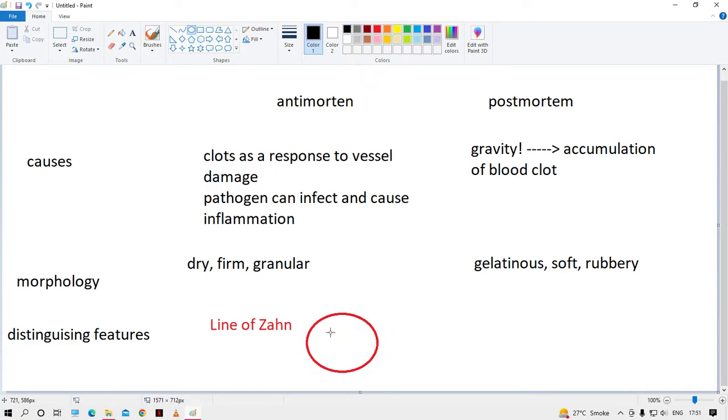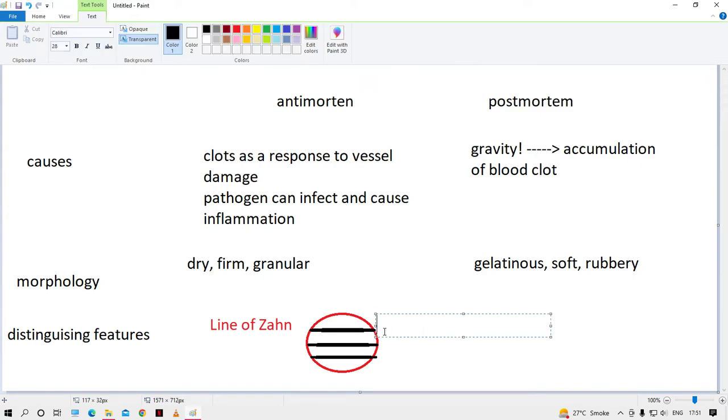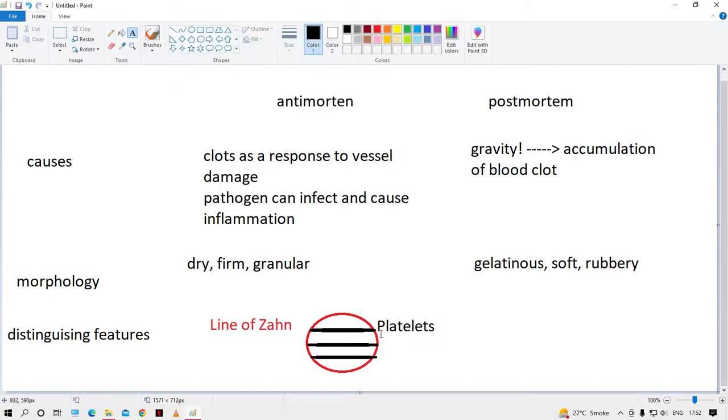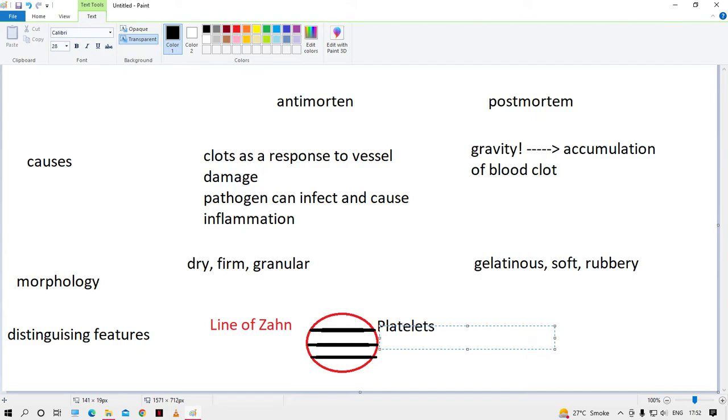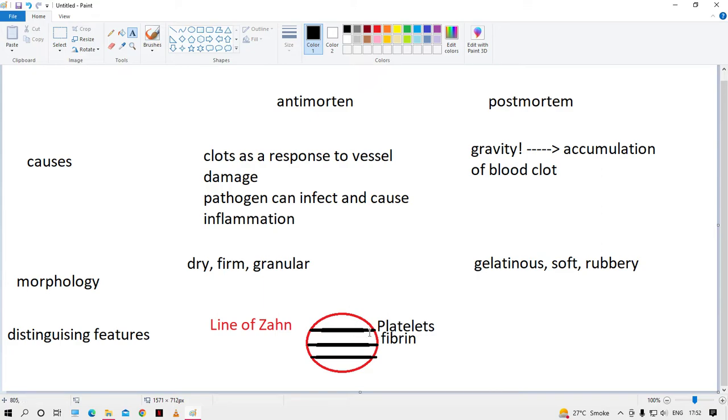So for example, if this is a clot, it will appear like this. There are alternate lines of platelets accumulated there—we all know normal clots have platelets—and then normal line of fibrin. These are normal components of the clot. These alternate lines of platelet and fibrin are seen. This is the line of Zahn. This is important.